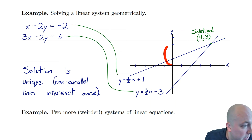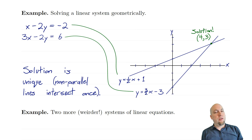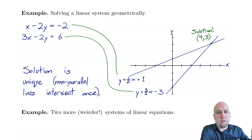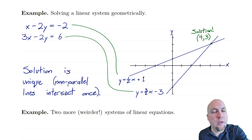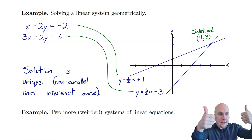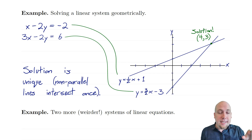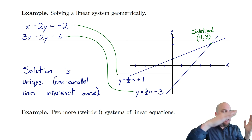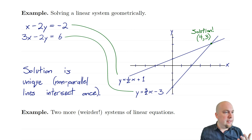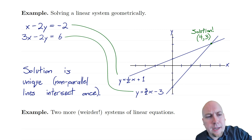Counting boxes, the intersection is four units over and three units up, so the solution looks like x = 4, y = 3. You can verify: plugging into the top equation gives 4 − 6 = −2, check; into the bottom gives 12 − 6 = 6, check. So we found the solution, and it's unique — two non-parallel lines intersect exactly once. That's one possibility with linear systems: a unique solution.